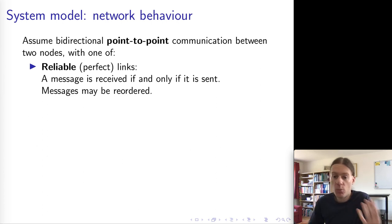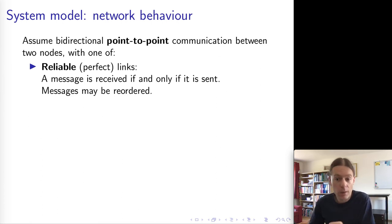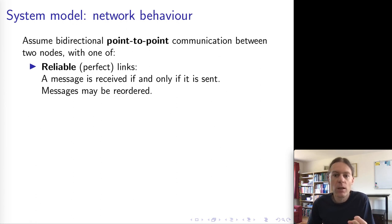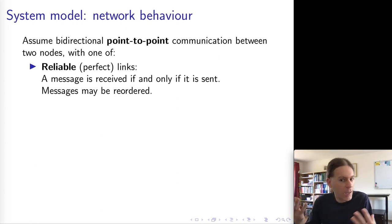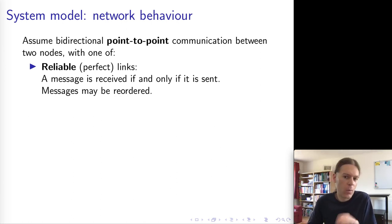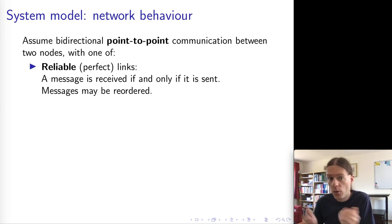The simplest model to program against is to simply assume the link is reliable — messages always get through. If a message is sent, it is received. If a message is received, it was previously sent. So the link doesn't lose messages and doesn't fabricate messages out of thin air. We're going to assume messages can be reordered. This is quite a strong assumption, since links may not actually be this reliable in practice.